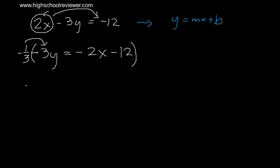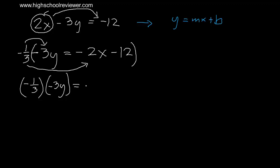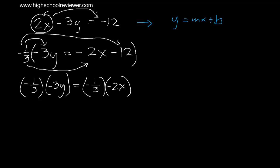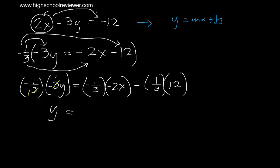We have negative 1 over 3 multiplied by negative 3y, and on the right side negative 1 over 3 multiplied by negative 2x, and also negative 1 over 3 multiplied by negative 12. A negative times a negative gives a positive result, so these multiplications will yield positive values.